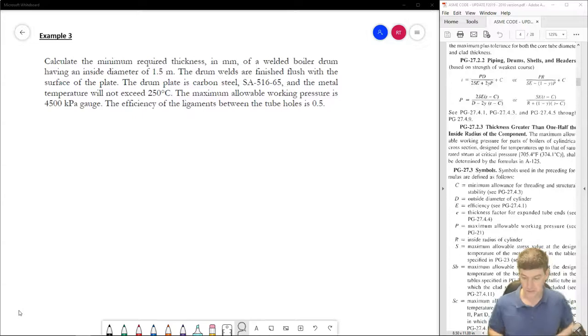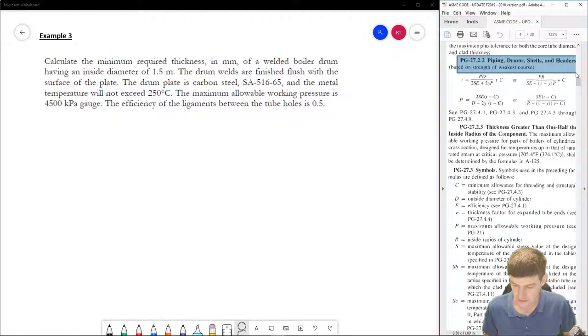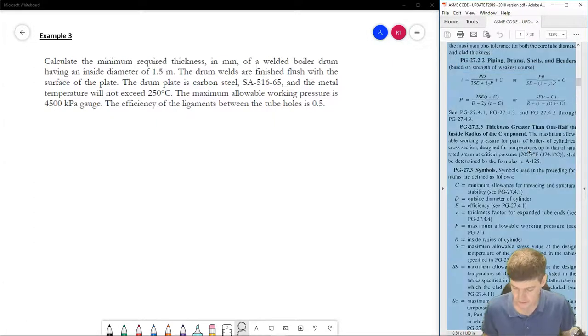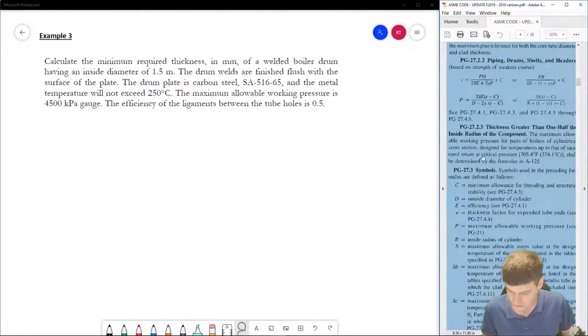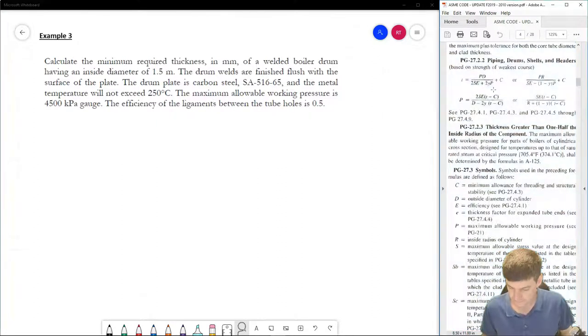So first thing that we want to do is we want to understand that we are calculating not a tube, but a boiler drum. So we want to make sure that we are going to the right section in our code. Okay, and so in this case, this is section 27.2.2, piping, drums, shells, and headers. Now, the important thing is that we have four different equations, and we have to make sure we choose the right one.